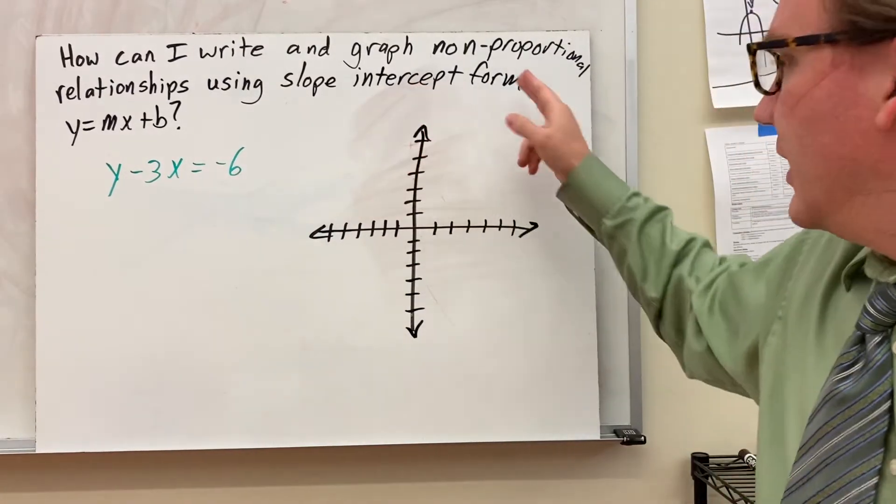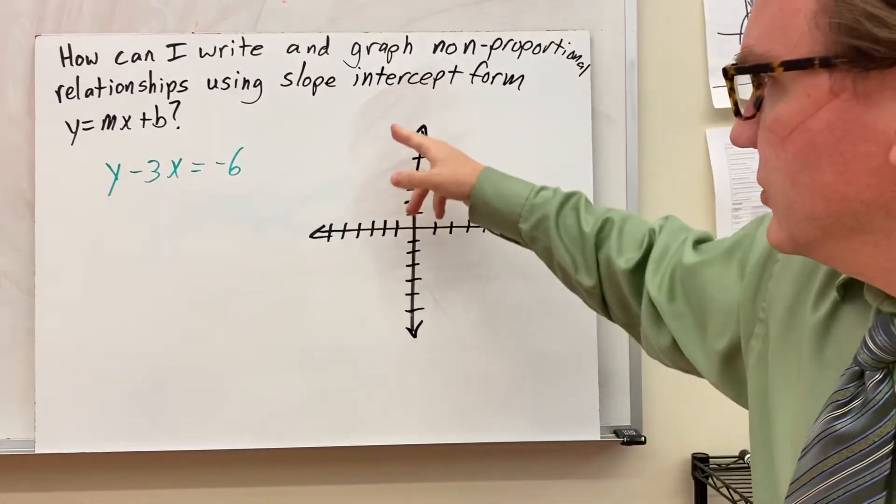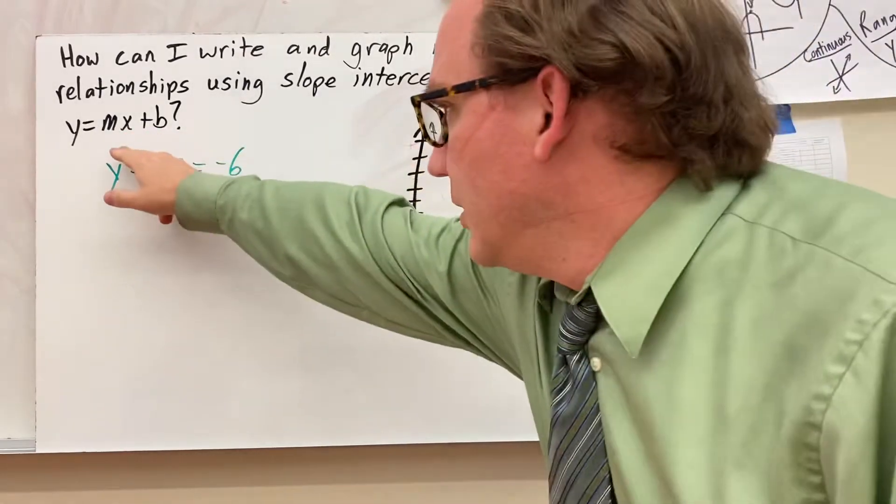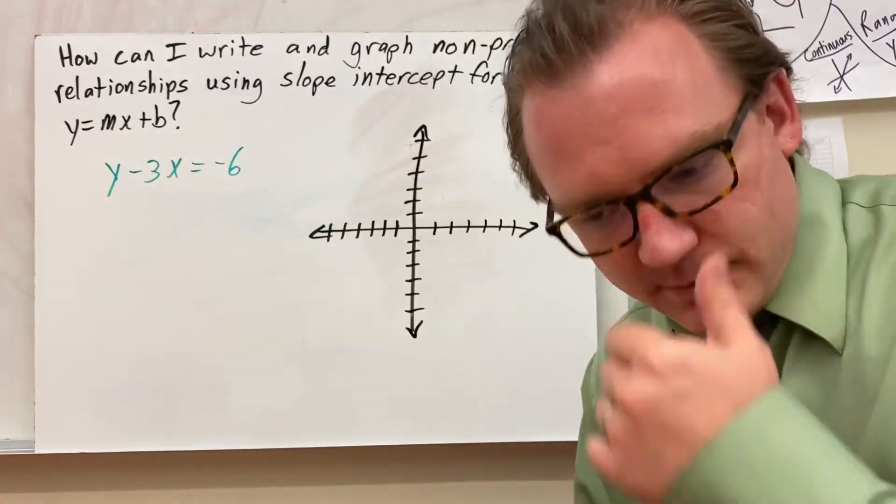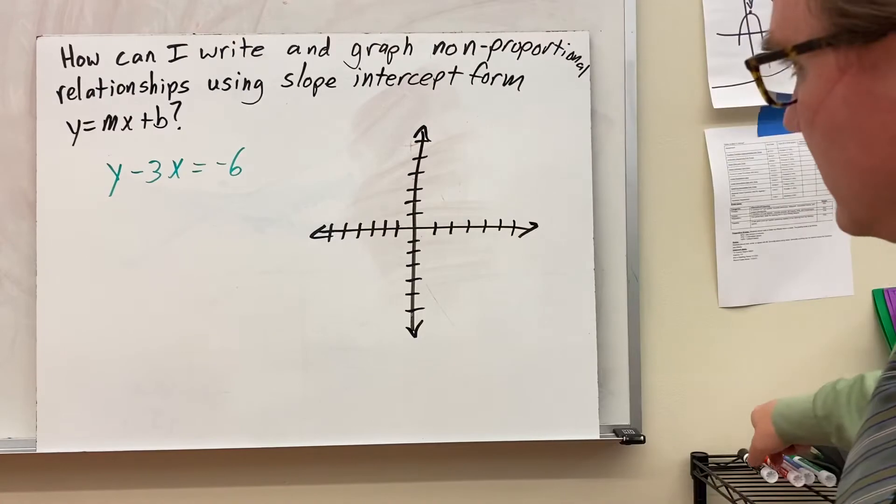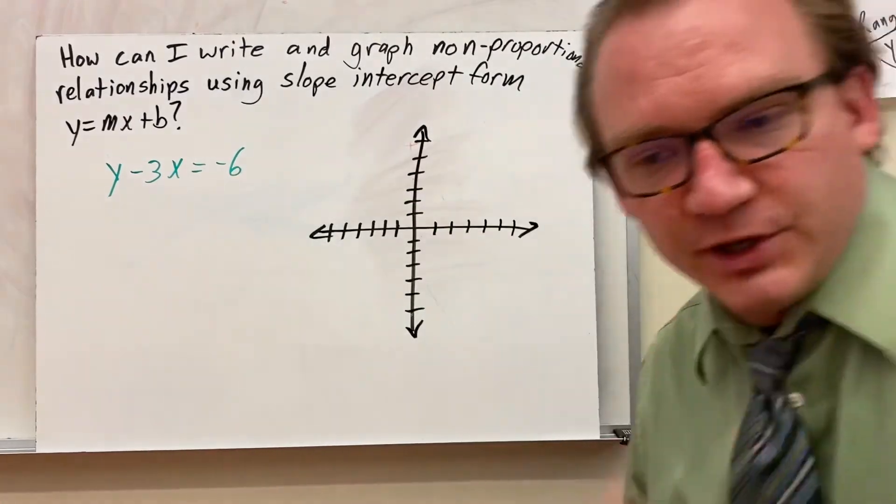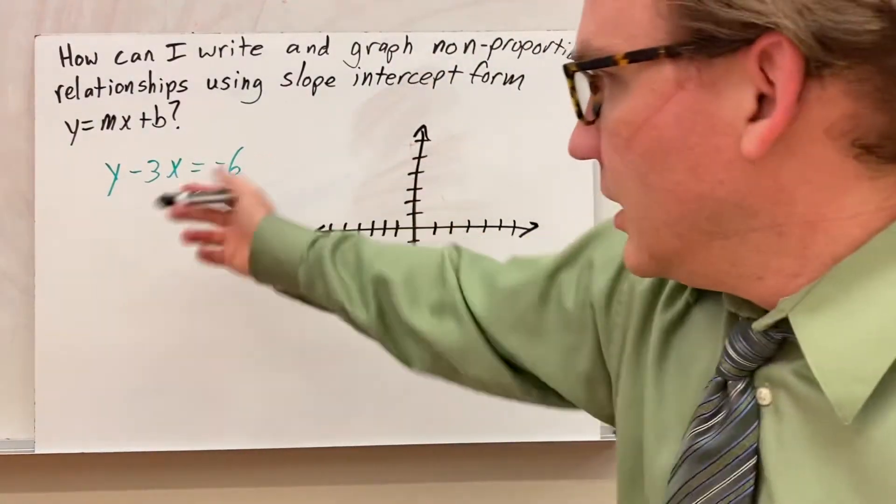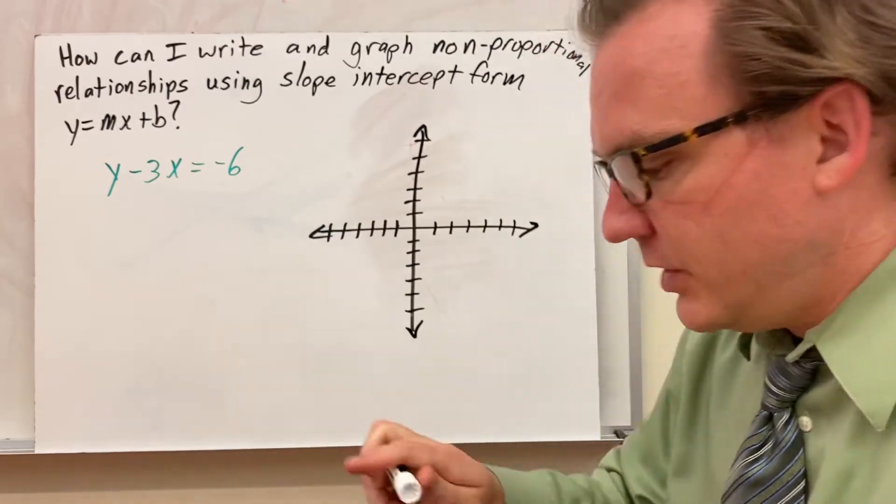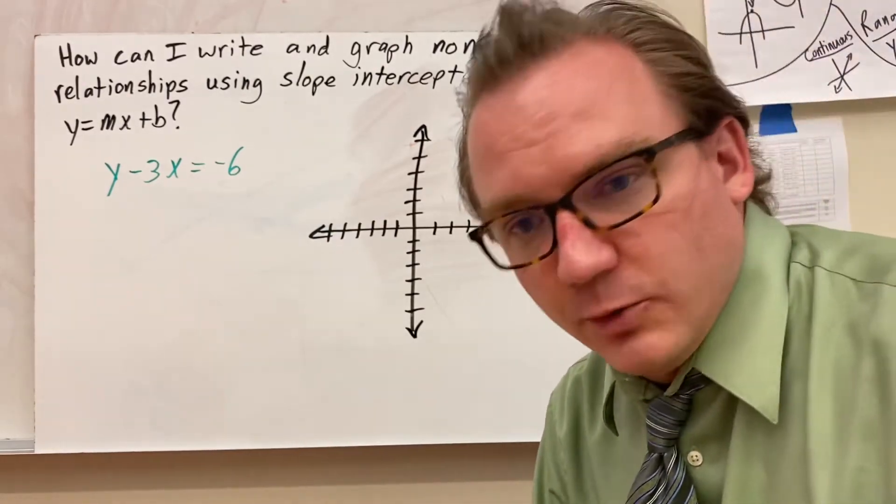How can I write and graph non-proportional relationships using slope-intercept form, or y equals mx plus b? We're going to start with an equation in what's called standard form, and we need to first change that into slope-intercept form.